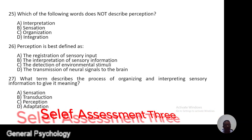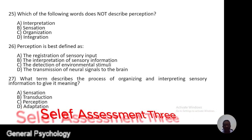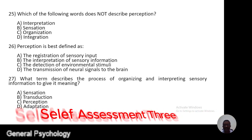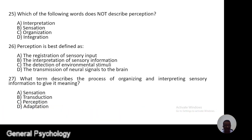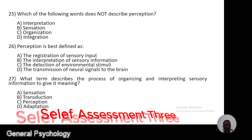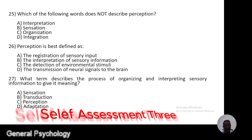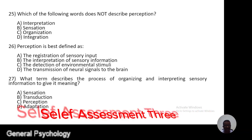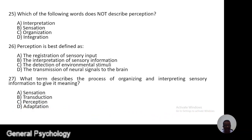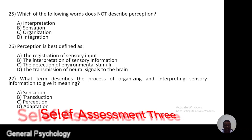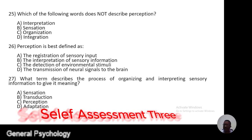Question number 25. Which of the following words doesn't describe perception? A, interpretation; B, sensation; C, organization; D, integration.